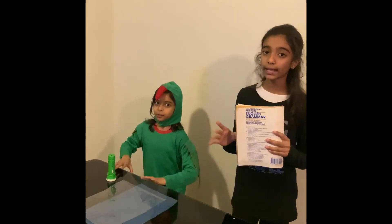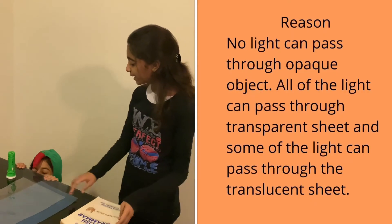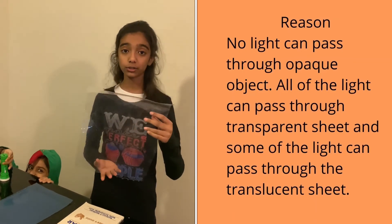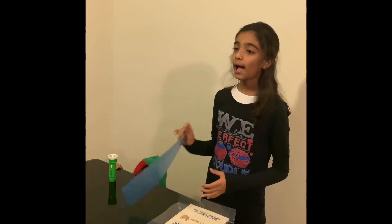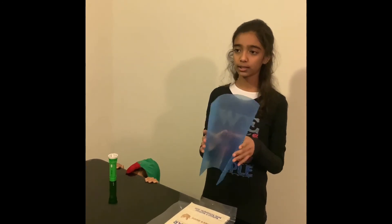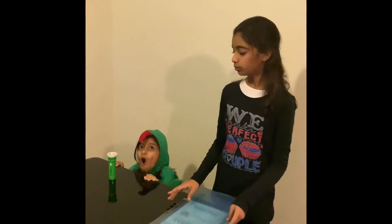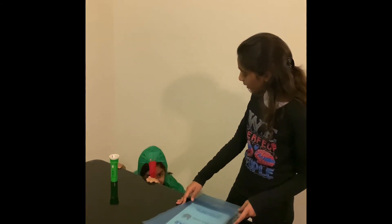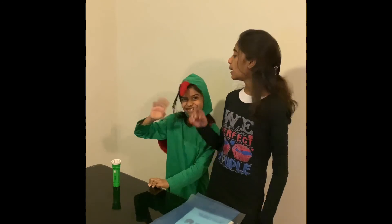No light can pass through an opaque object. All of the light can pass through transparent objects, and some of the light can pass through translucent objects. So Polly, we have to say goodbye. Don't forget to subscribe — say bye bye!